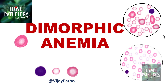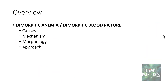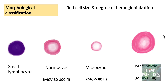In the last few sessions we have discussed normocytic normochromic anemia, microcytic anemia, and macrocytic anemia. In this session we will be looking into the various causes of dimorphic anemia, the mechanism of dimorphic anemia, the morphology of dimorphic anemia, and finally the approach to dimorphic anemia.